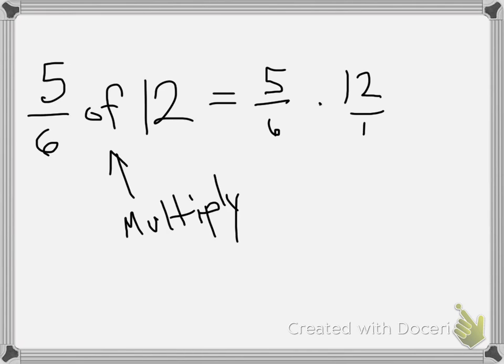So now you multiply across. Let's do the bottom first. What's 6 times 1? 6. Now, what's 5 times 12? Well, I don't know yet but I'm going to put it right here.